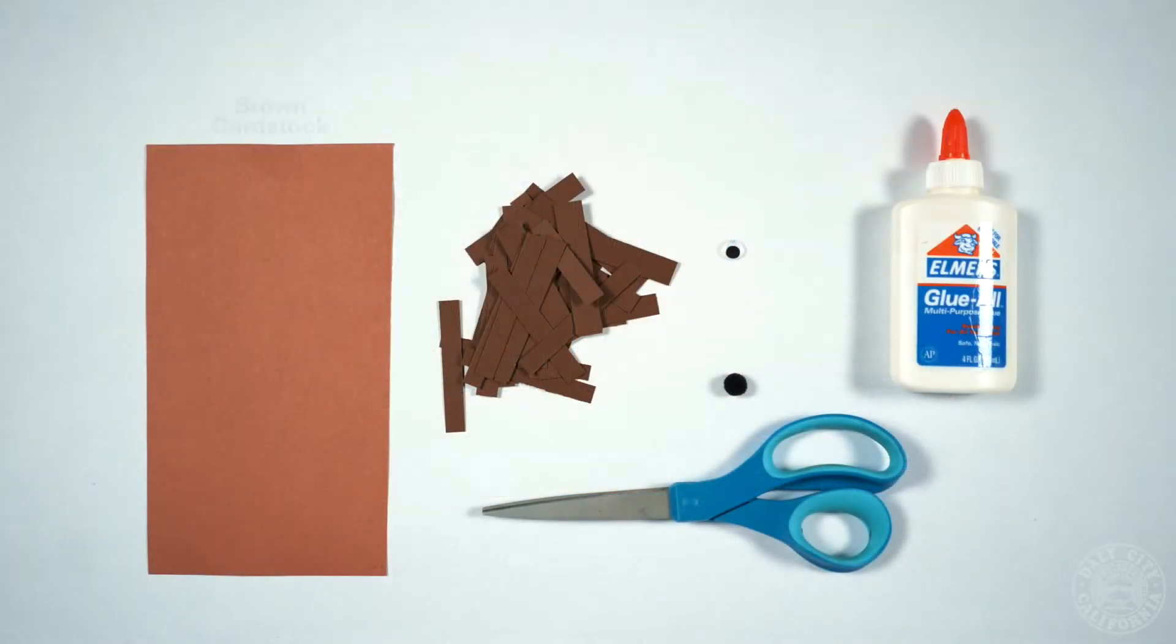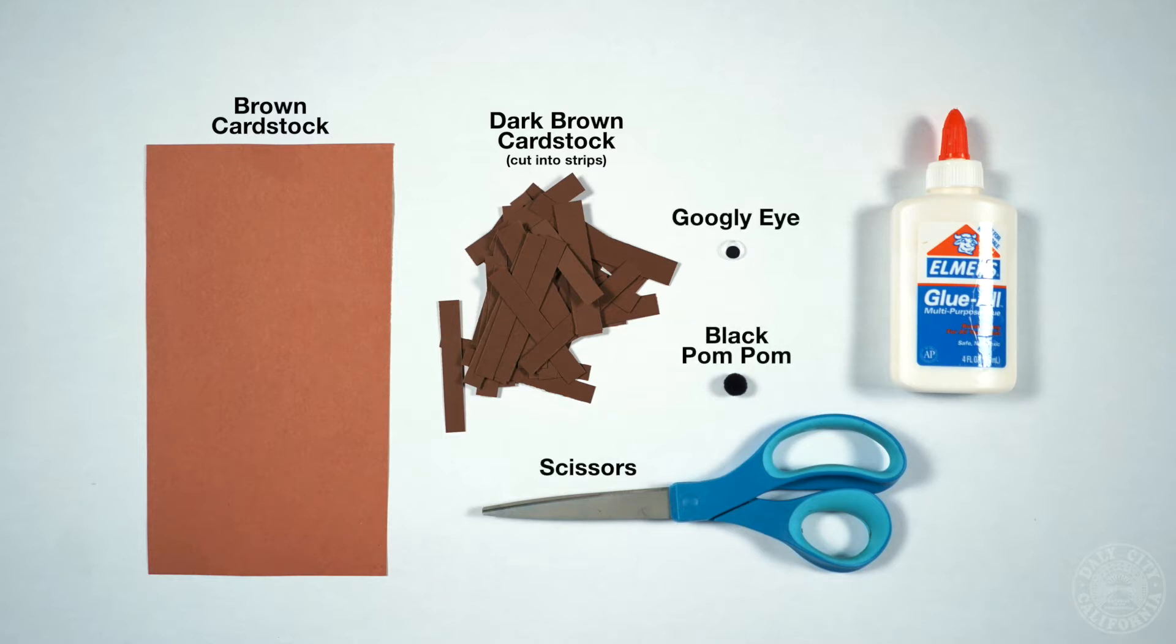For your supplies today, you're going to need brown cardstock, dark brown cardstock cut into strips, a pair of scissors, a black pom-pom, a googly eye, and wet glue.